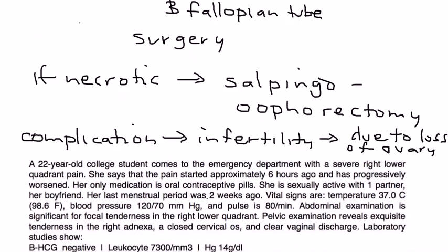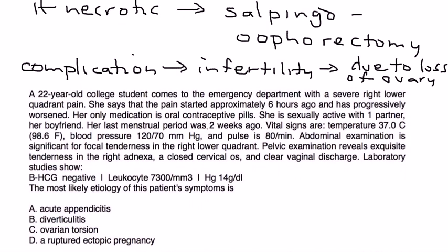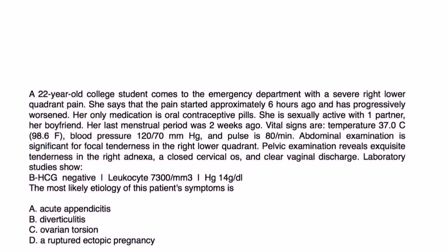Now let's take a look at a couple of vignettes. A 22-year-old college student comes to the emergency department with severe right lower quadrant pain. The pain started approximately six hours ago and progressively worsened. Her only medication is oral contraceptive pills; she is sexually active and her last menstrual period was two weeks ago.